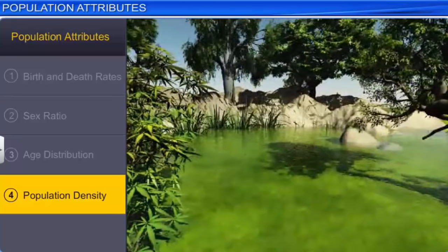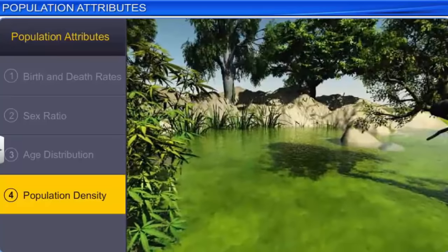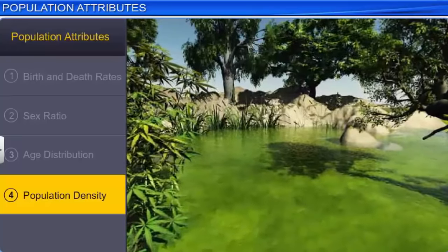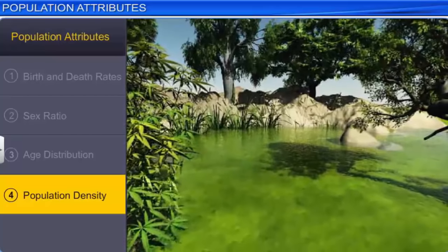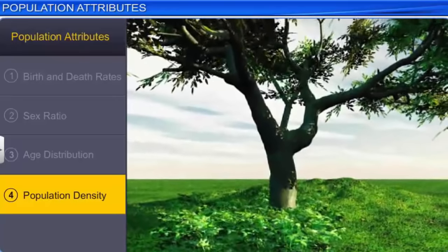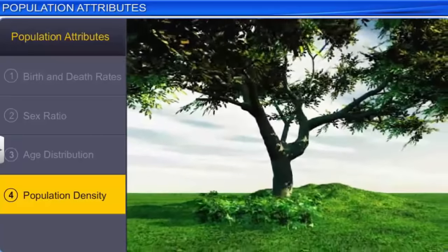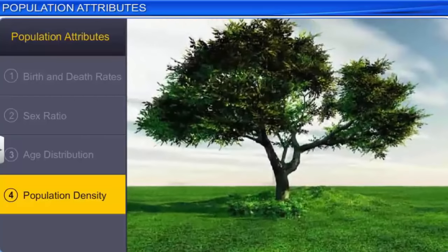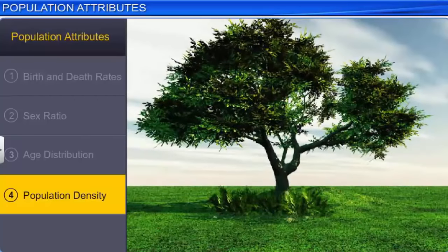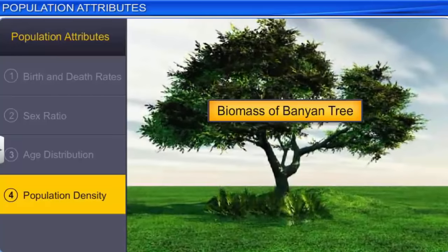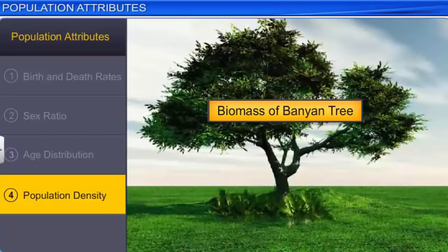Although the total number of individuals of a species provides the most appropriate measure of its population density, in some cases measuring population density in terms of numbers is either meaningless or difficult to determine. For instance, if there are 200 Parthenium plants growing under a single huge banyan tree, it would be incorrect to say that the population density of the banyan tree is very low compared to the Parthenium plants. In such a case, the biomass density — or the biomass per unit area or volume — of the banyan tree provides a meaningful measure of the population size. Thus, population density can be a biomass density or a numerical density.